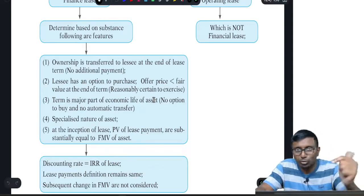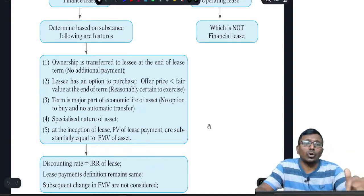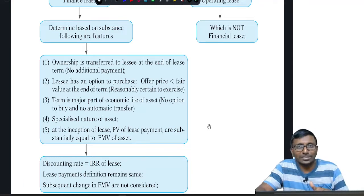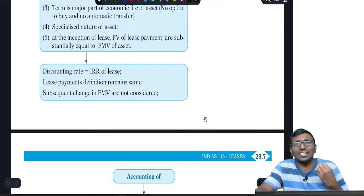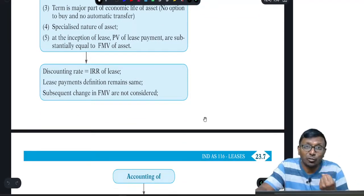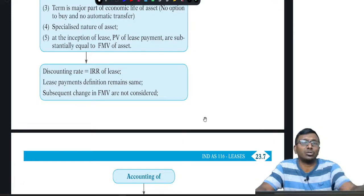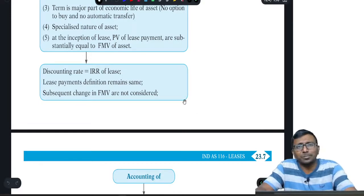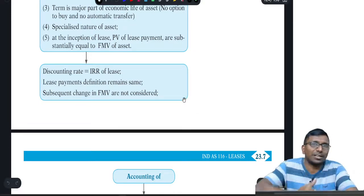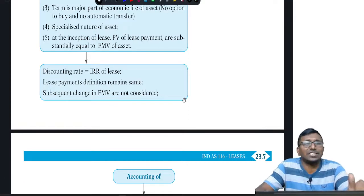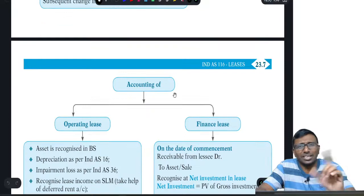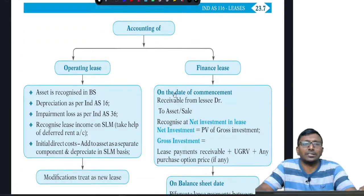When you are in the books of the lessor for discounting, you have only one option — that is the IRR of the lease. IRR means the real rate of return at which the lessor is earning. With respect to lease payments, the same approach seen in the lessee's books of accounts applies here as well.